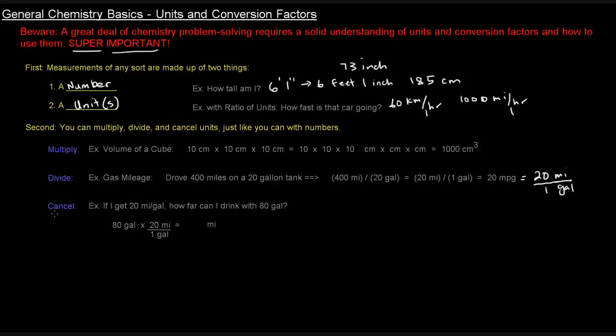Now you can also cancel units, just like you can cancel numbers. So let's say the question was, if I get 20 miles per gallon, how far can I get with 80 gallons? I set it up so that my answer would give me miles. I want to know how many miles I can go on 80 gallons.